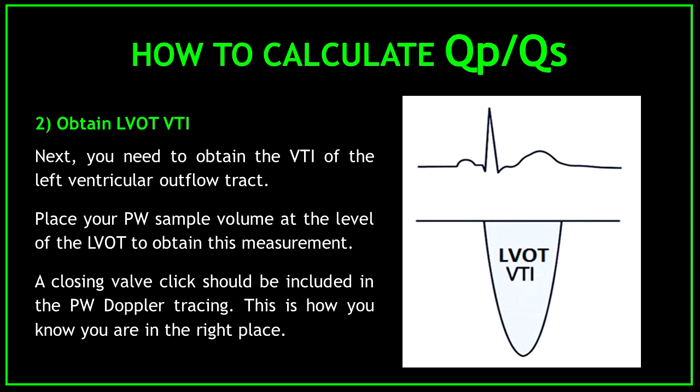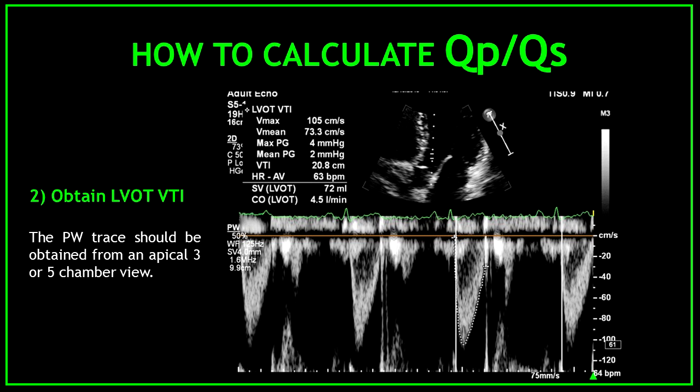Number two: obtain the LVOT VTI. You need to obtain the VTI of the left ventricular outflow tract. Place your pulse wave sample volume at the level of the LVOT to obtain this measurement. A closing valve click should be included in the pulse wave Doppler tracing — this is how you know you are in the right place. The pulse wave trace should be obtained from an apical three-chamber or five-chamber view.